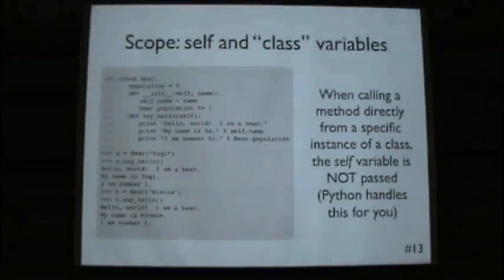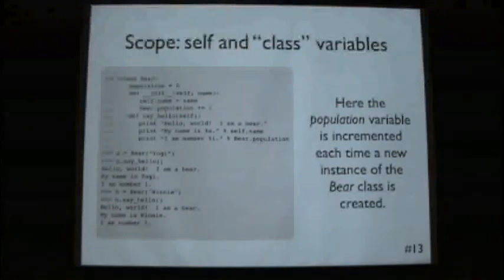So okay. If we create an instance of bear called yogi, and say hello, it says, hello world, I'm a bear, my name is yogi, I'm number one. And so our population counter incremented by one, and the name is we. We create another instance called winnie. Again, it goes to two. So you're right. So if we now call it again, a dot say hello, you would say I'm number two, number one.